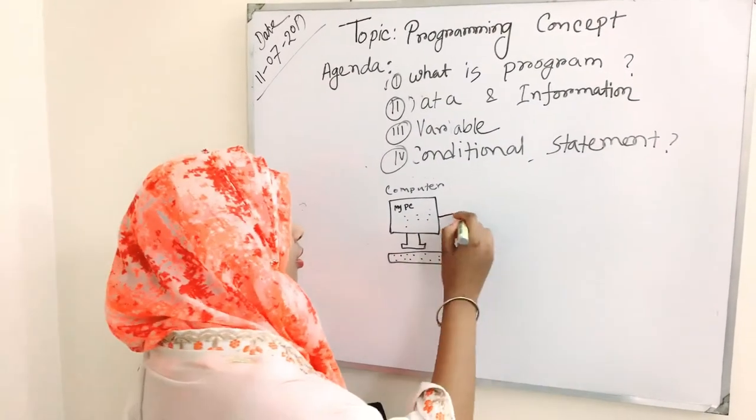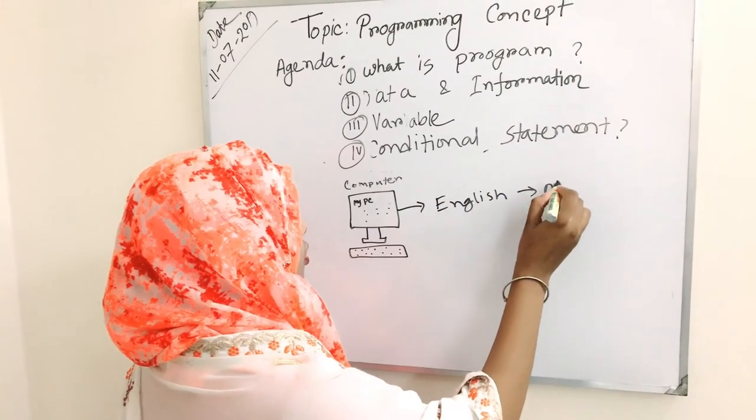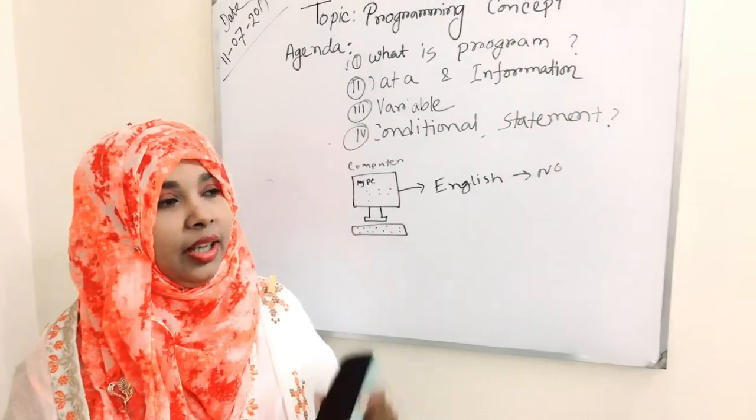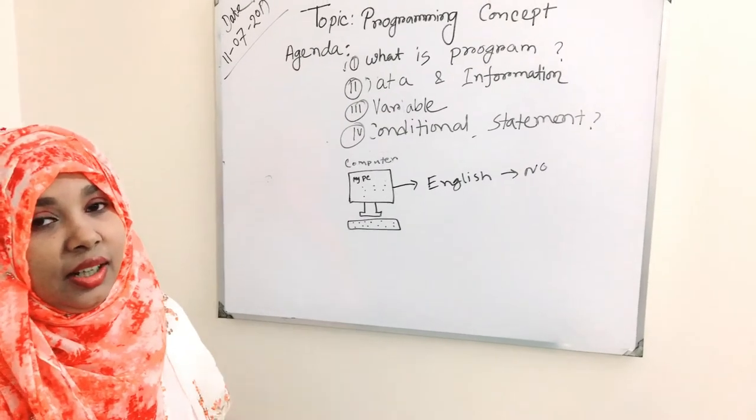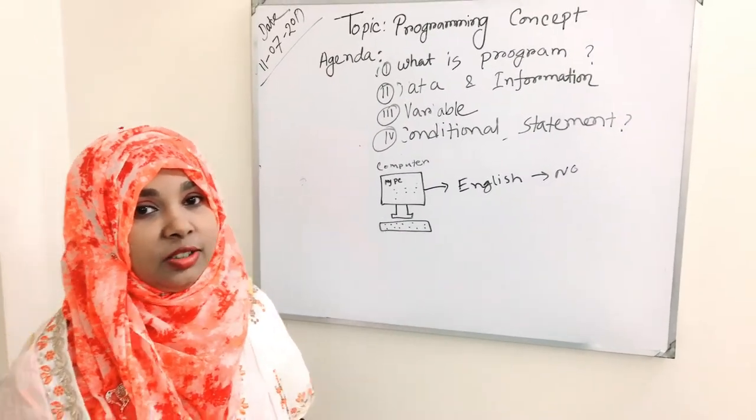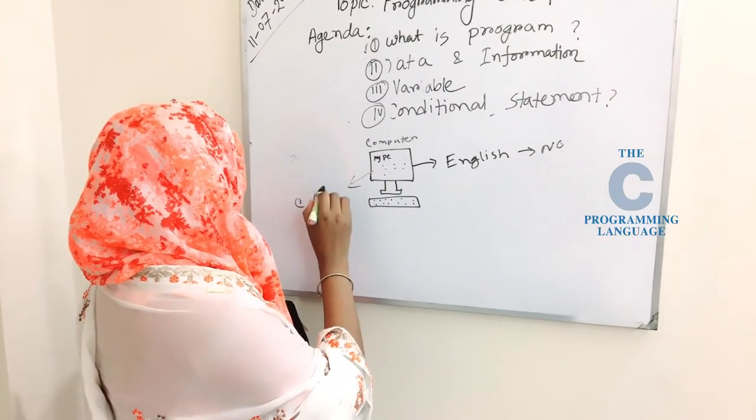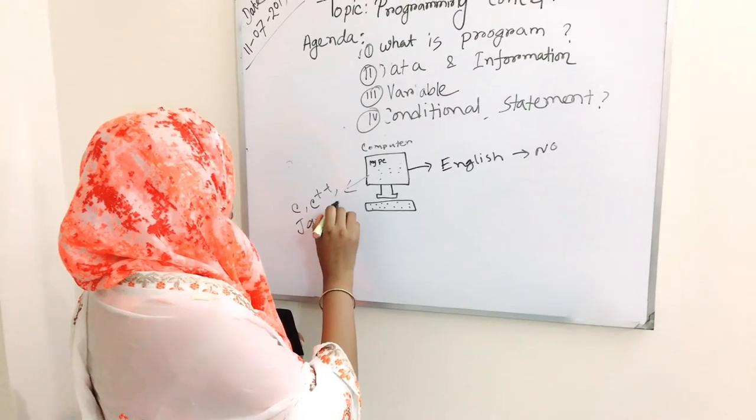Computers cannot understand English, Bangla, Hindi, or any other human languages. They have several languages that they can understand and they can do any task for you. These languages are called C, C++, Java, Ruby.